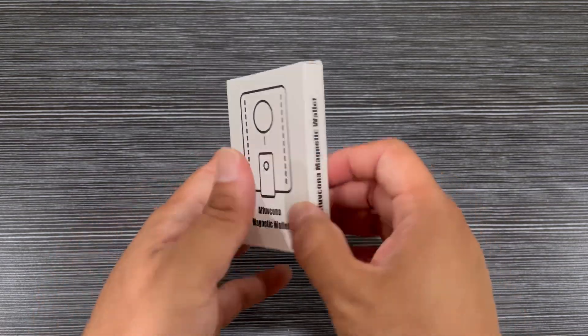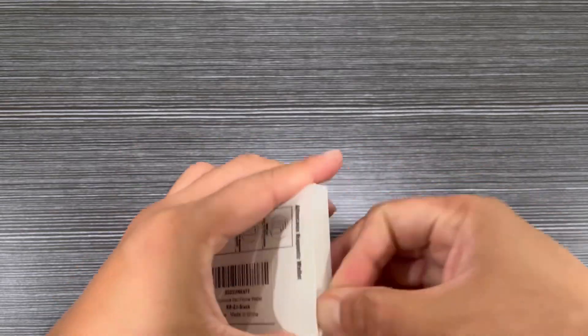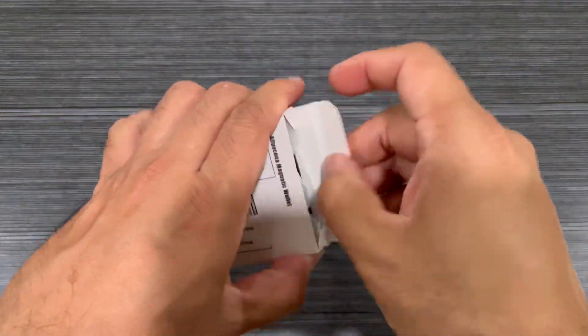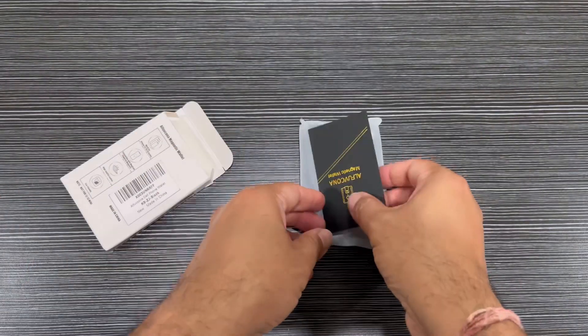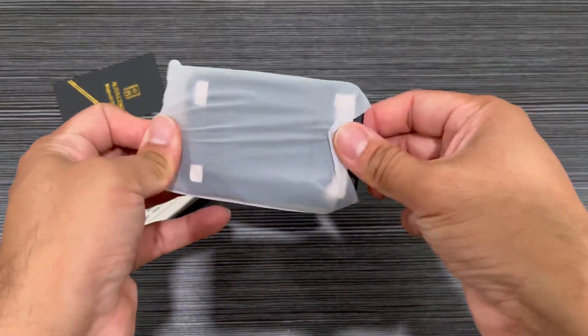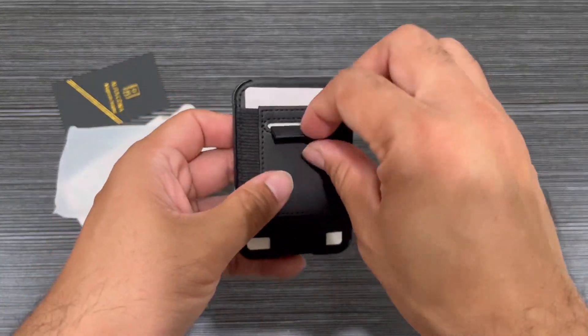Hey guys, showing you this MagSafe wallet stand with strap. It's a two-in-one adjustable leather magnetic wallet stand compatible with MagSafe strong magnetic phones, specifically a wallet stand for iPhones.